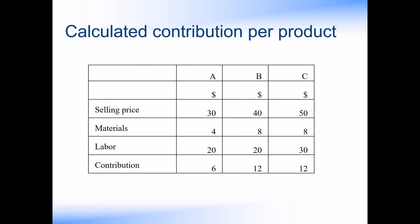Let's calculate our contribution per product. Taking the selling price and deducting the materials and labour, we arrive at the contribution per product. We can see that products B and C produce the same contribution, whilst product A produces the lowest.